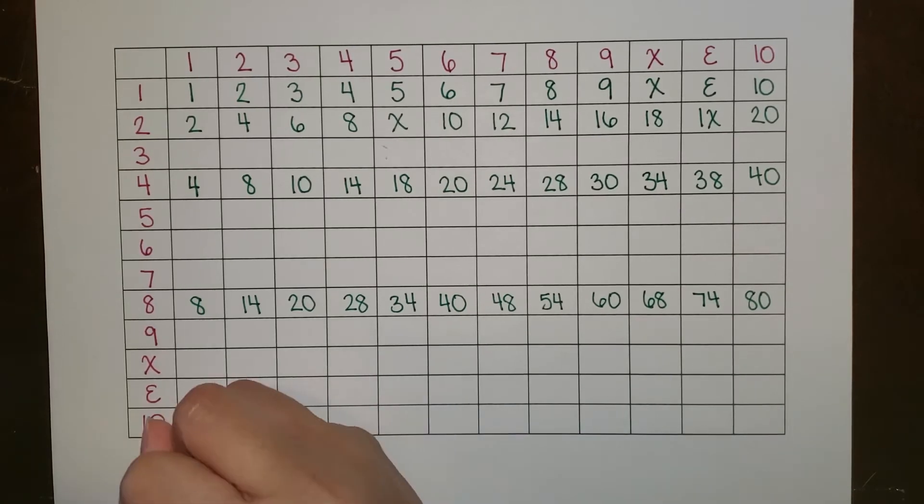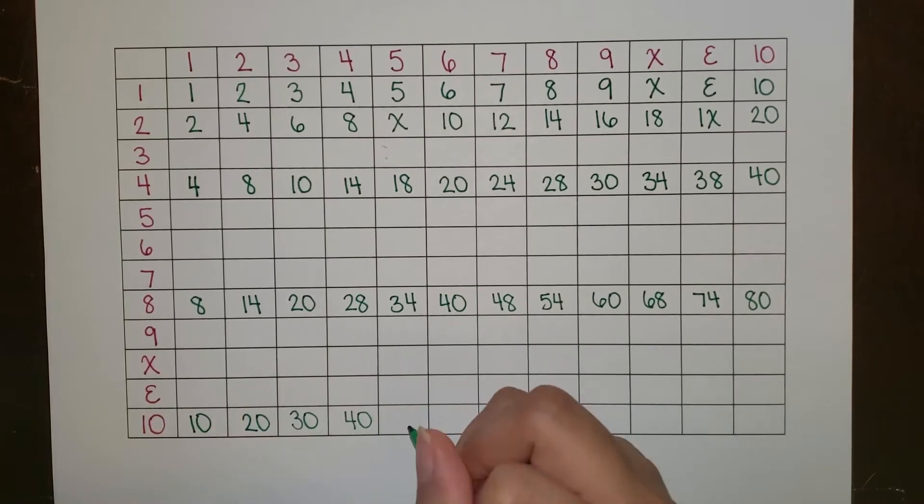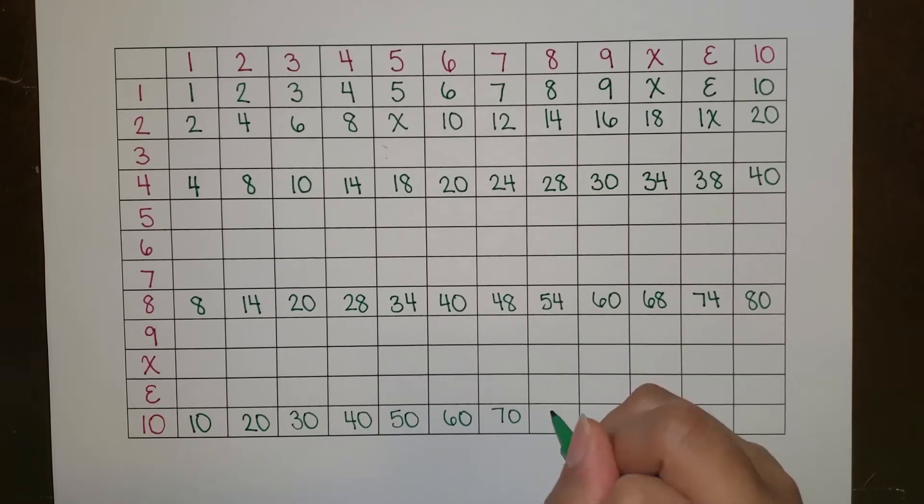After the row of eights, I'm going to go ahead and skip down to the row of does, since they will all just be the same number with zero following it.